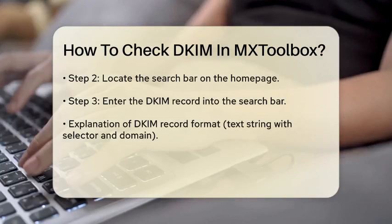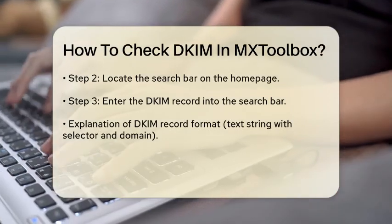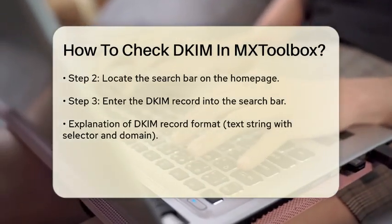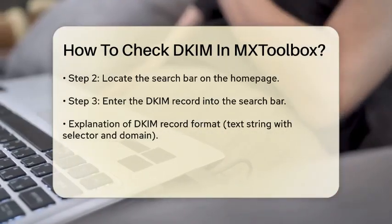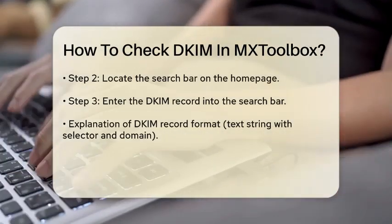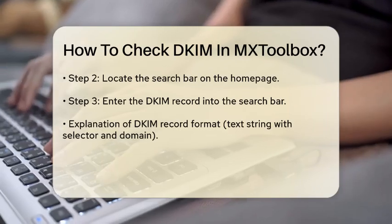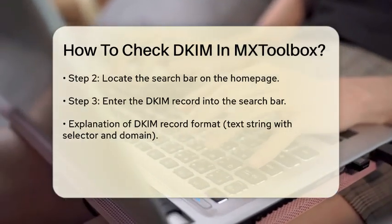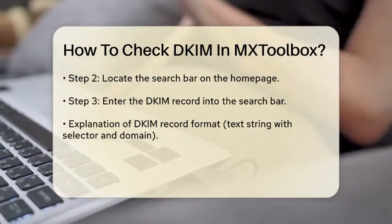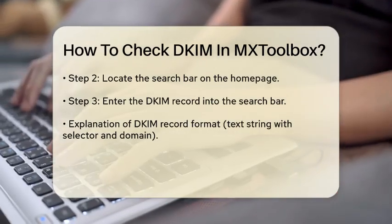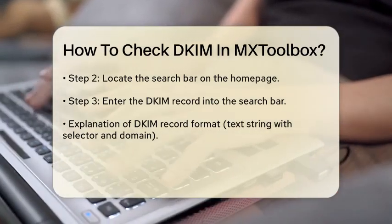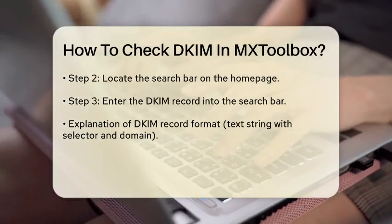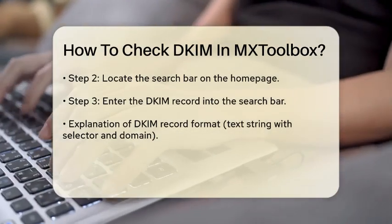In this search bar, you will need to enter your DKIM record. The DKIM record is usually formatted as a text string and includes the selector and domain name. To find your DKIM record, you may need to access your email service provider's settings or your domain's DNS records.